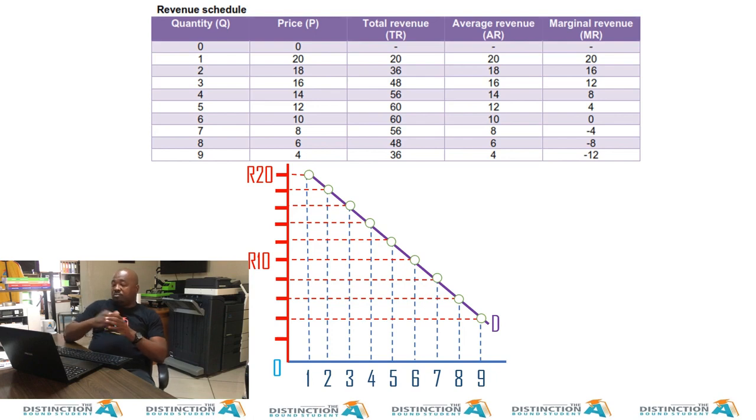Now from this demand curve, we look at the next curve, the average revenue curve. If you look at the average revenue curve AR, it is 100% the same as the one for price: 20, 20, 18, 18, 16, 16. It also drops by two. And the reason is, if you use the formula for calculating average revenues, TR divided by Q. So if you look at TR for the first unit, it's 20 divided by one, that's 20. The second TR is 36, 36 divided by two is 18. The third one is 48, 48 divided by three, that's 16. So it mirrors the price.